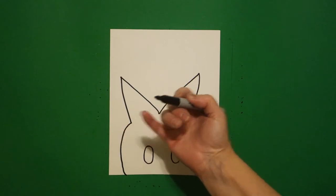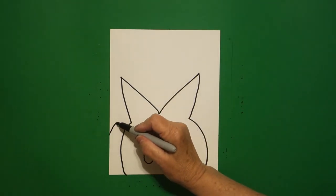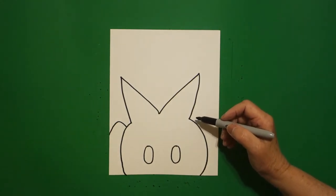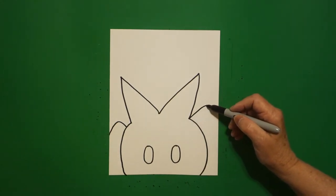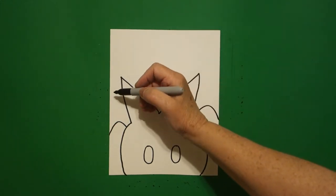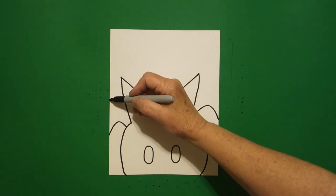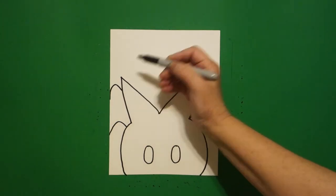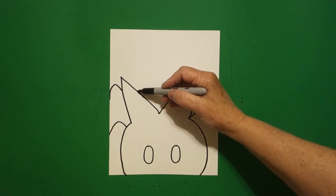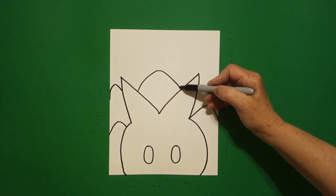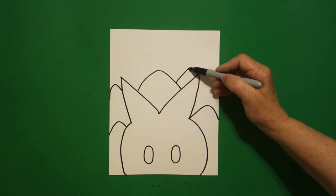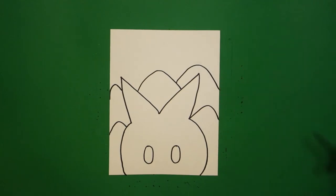Now I come over here on the left and I'm going to draw a curved line up, down, connect. Jump over, let's draw another curved line up, down, off the page. Come back to the left, draw a curved line up, down, connect. Come right here in the center, draw a curved line up, down, connect. And one more big curved line up, down, off the page.